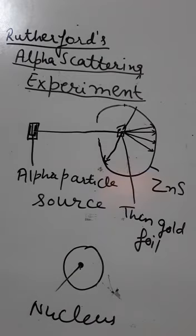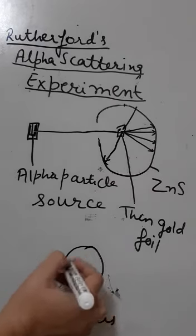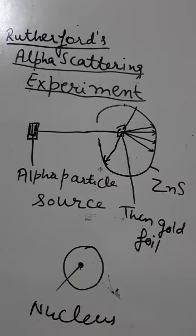Secondly, he said that the electrons keep revolving around the nucleus at very high speed. The circular paths are called orbits.